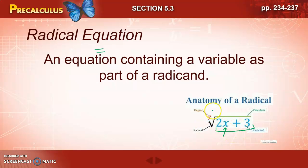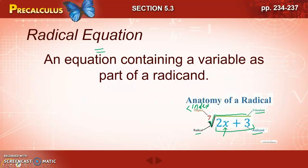Now you see here there's an anatomy of a radical and there are some different words you may not quite know. The expression under the root symbol is called the radicand. You'll see that this is referred to as the degree, but most of the time we're going to call it the index. The radical symbol can be broken into two parts: the radical part and the vinculum part. We won't be using that terminology, but for our purposes we'll call it the radical symbol, the radicand, and the index.